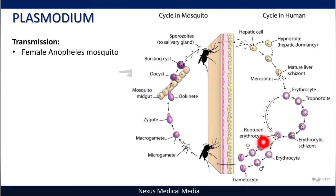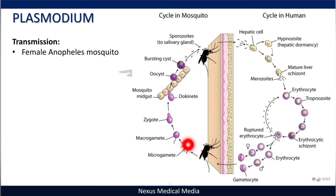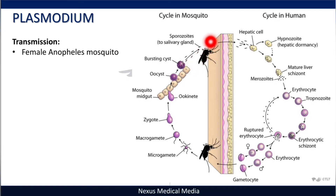Some merozoites transform into gametocytes. The female macrogamete is large and the male microgamete is small. When a mosquito bites an infected person, it takes up these gametocytes. The micro and macrogametes fuse to form a zygote, then a kinete in the midgut of the mosquito, then an oocyst, which ruptures to release sporozoites into the salivary gland. Sporozoites are the infective stage for humans; gametocytes are the infective stage for the mosquito.